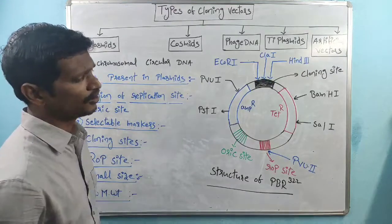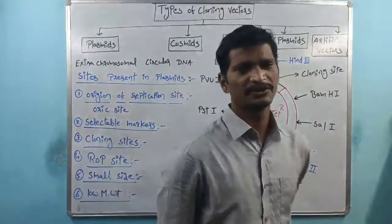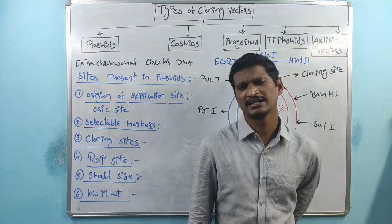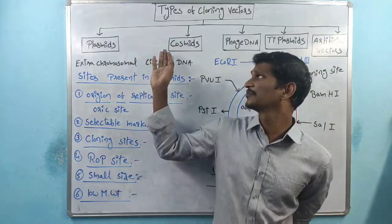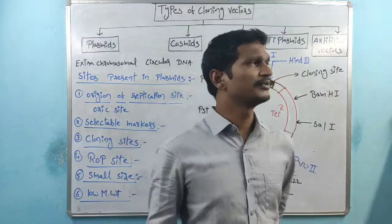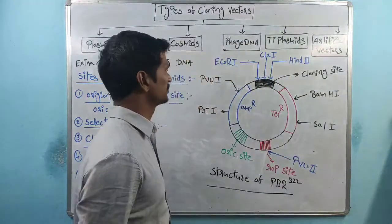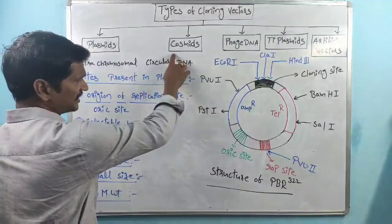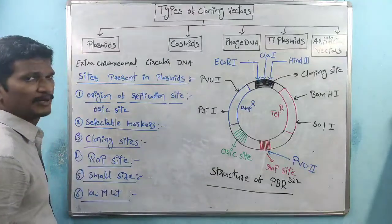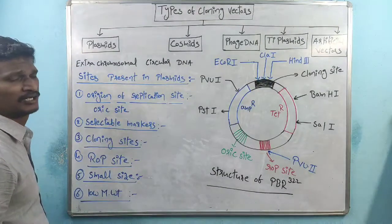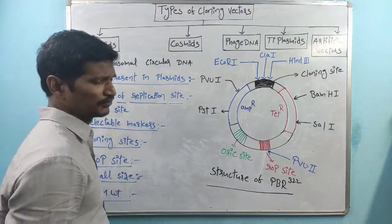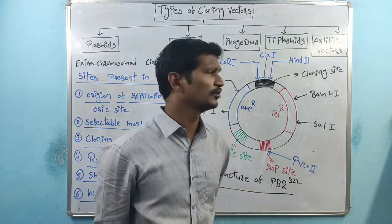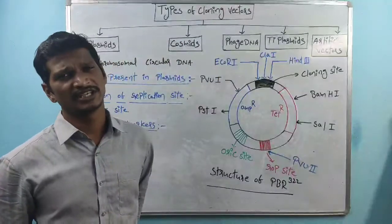The second type is cosmids. Lambda phage DNA combined with plasmid DNA — that is about cosmids. Next is phasmids — bacteriophages which attack bacteria. We are using the phage DNA as the vector.